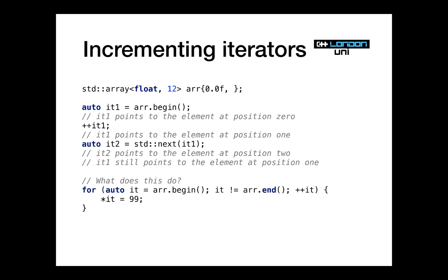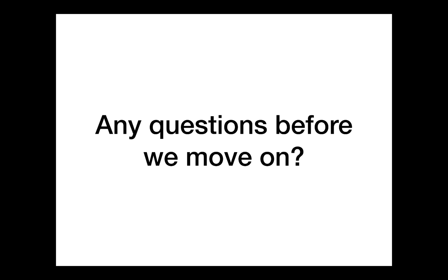In C++11 they introduced the range for loop, which is shorthand for doing exactly this kind of iteration. It's syntactic sugar that does essentially the same thing — `auto it = vec.begin()` behind the scenes — but written in a much more concise form. This saves us having to write all that three-part for loop code.